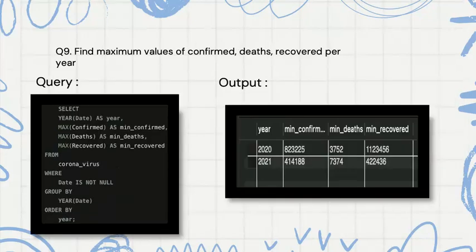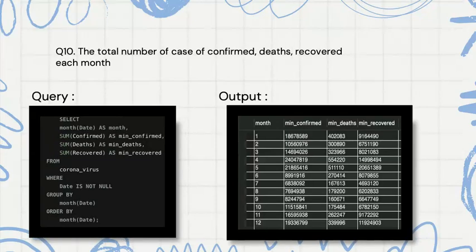Then we are finding the maximum values of confirmed, deaths, and recovered per year. In the previous query we found the minimum, and now we are finding the maximum using the MAX aggregate function.